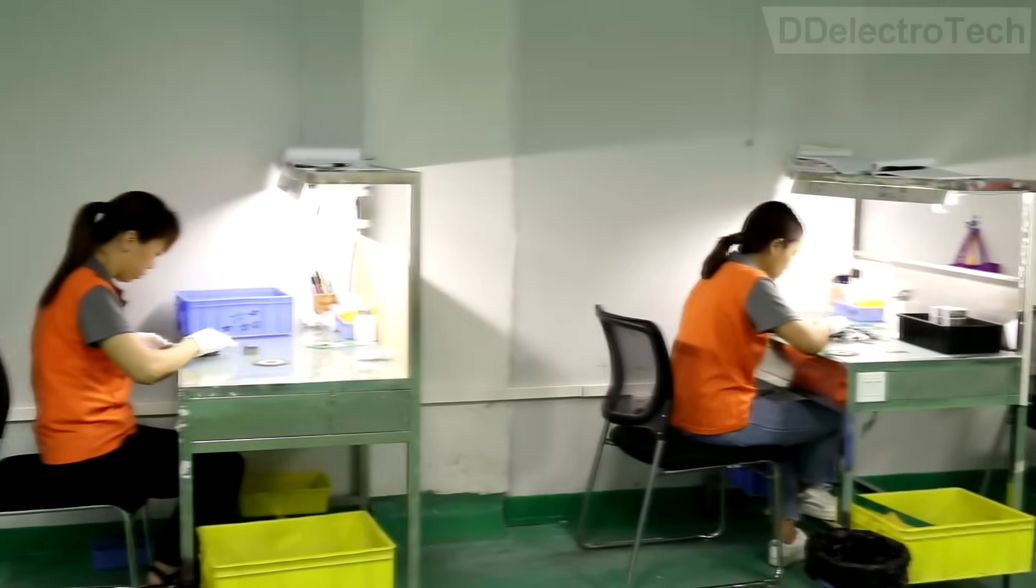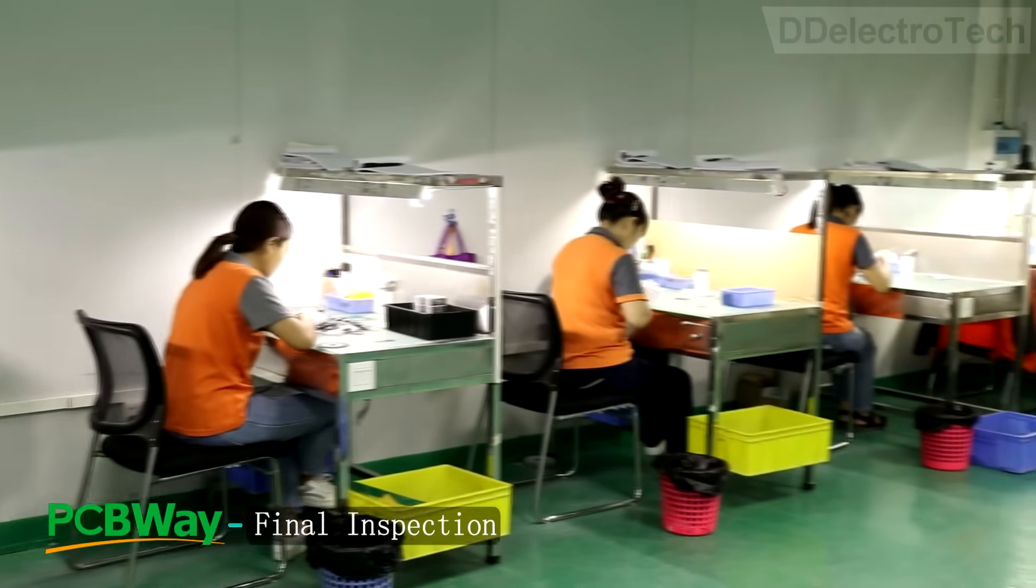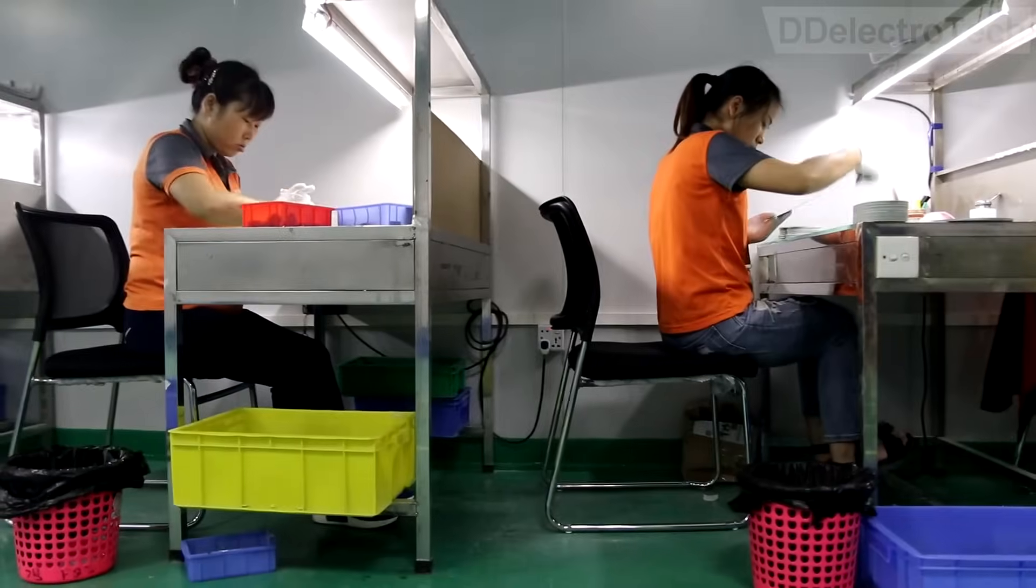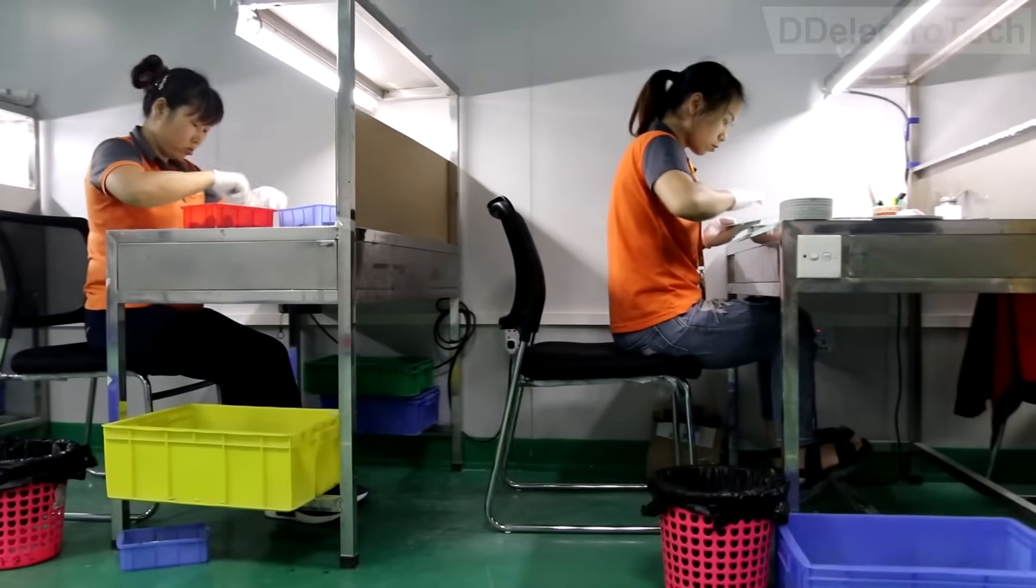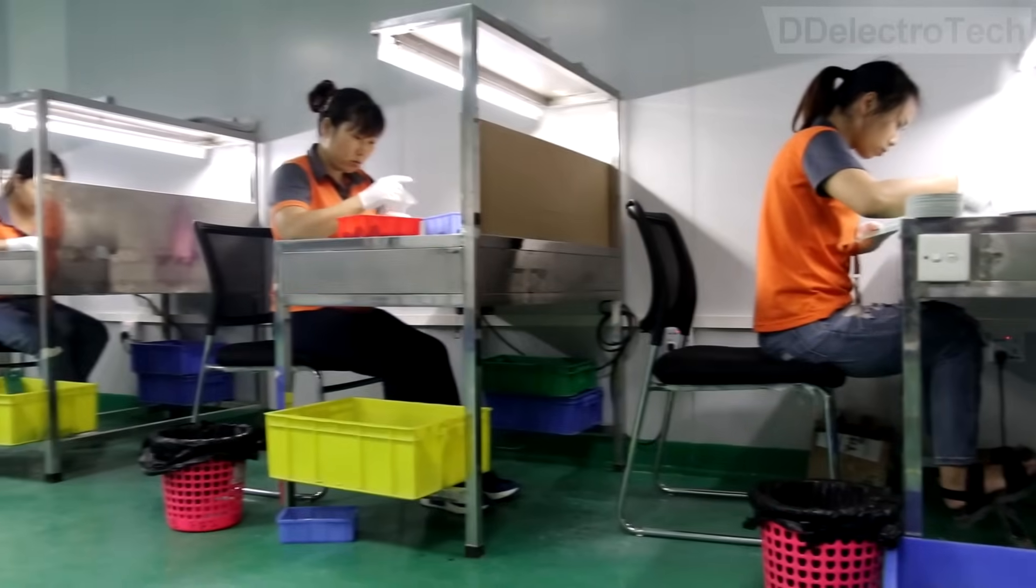Then a team of sharp-eyed inspectors give each PCB a final and careful check-over. She looks for any cosmetic defects like scratches and markings, and also checks aperture thickness, holes, etc.